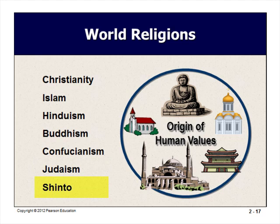Shinto, meaning 'way of the gods,' arose as the native religion of the Japanese. It teaches sincere and ethical behavior, loyalty and respect toward others, and enjoyment of life, claiming about 4 million strict adherents in Japan. Shinto beliefs are reflected in the workplace through lifetime employment — although this is waning today — and the traditional trust extended between firms and customers. Japanese competitiveness in world markets has benefited from loyal workforces, low employee turnover, and good labor-management cooperation.